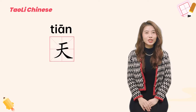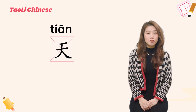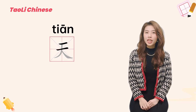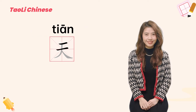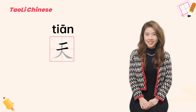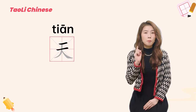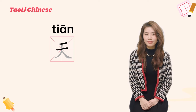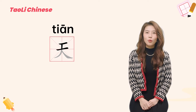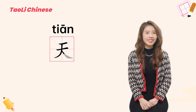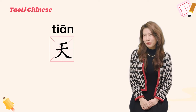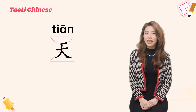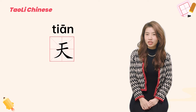Let's learn to write this character together. First, let's start with 二. Begin with a horizontal stroke, then the second horizontal stroke — be careful, the second horizontal stroke is longer than the first one. Next, write the character 人 like I told you before.